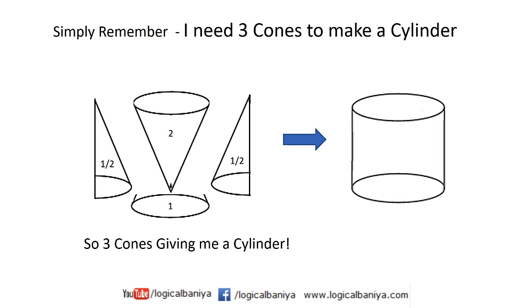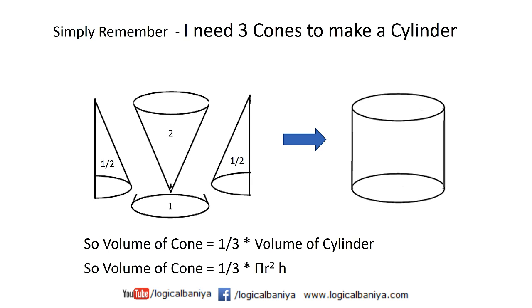So I have used three cones to build a cylinder. The volume of the cone will be 1/3 into the volume of the cylinder, which is π r square h, so the volume of the cone will be 1/3 π r square h.